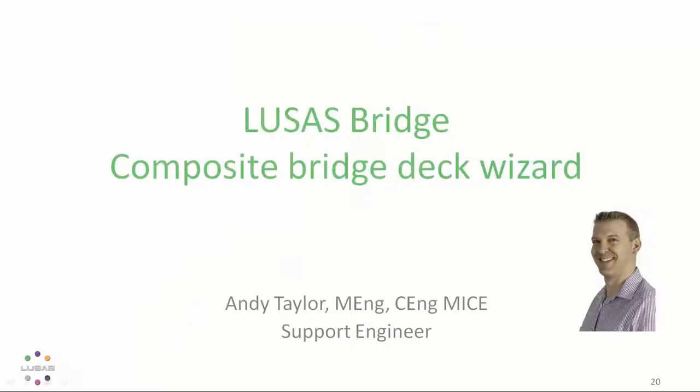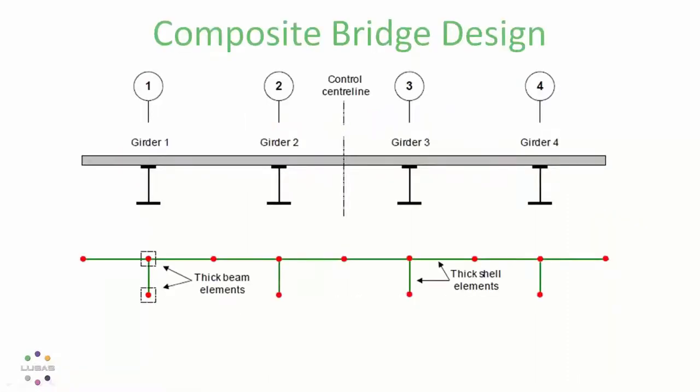So now let me pass you over to Andy who's going to show us a quick run through the composite bridge deck wizard. Thank you very much Terry. So the composite bridge wizard is aimed at steel concrete composite structures where the slab and the girder webs are going to be modeled as shell elements while the girder flanges, stiffeners and any bracing will be modeled as beam elements.